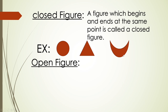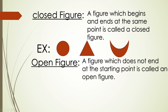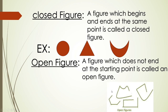And for a crescent, both the starting and ending points are the same, so this is also a closed figure. Now, open figure: a figure which does not end at the starting point is called an open figure. For these figures, the starting point and ending point are different, so these are all called open figures.